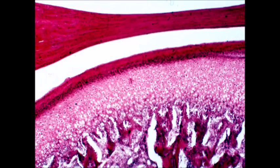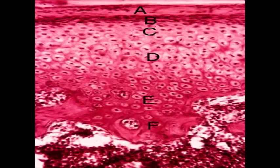This is another view of the developing mandible. The layers are: A — the articular zone, B — the reserve zone, C — proliferative cartilage, D — hypertrophic cartilage, E — calcified cartilage, and F — bone.